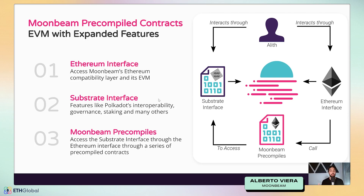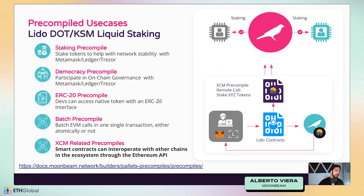If you've ever done staking on the Moonbeam dApp, that's actually a Substrate feature — you're interacting with the Moonbeam runtime directly. There's a staking precompile that exposes the Substrate functions, which is why you can sign with MetaMask or Ledger or any compatible wallet. There are many precompiles available — you can find a full list in the documentation. You can access democracy features and participate in governance using MetaMask, Ledger, Trezor, or any compatible wallet.